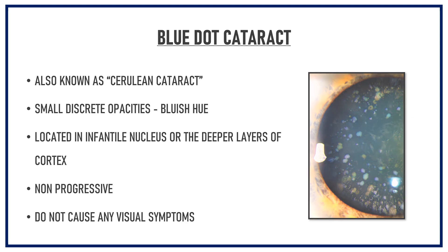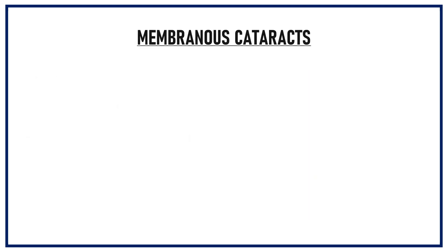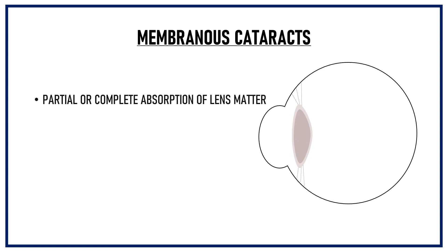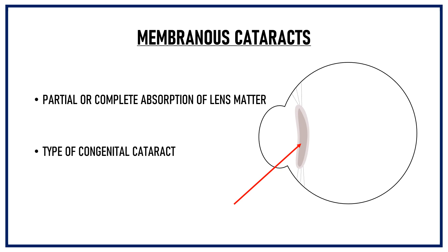Membranous cataracts occur when there is partial or complete absorption of the lens matter, so the lens shrinks in size. It is a type of congenital cataract.